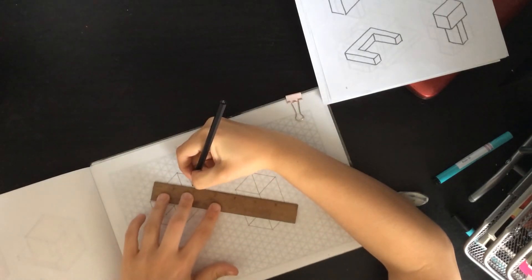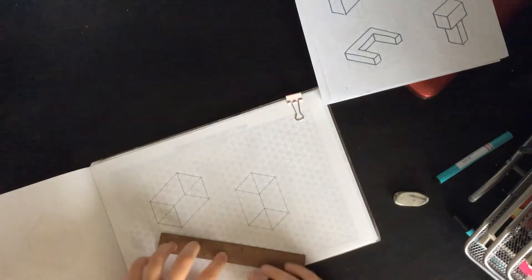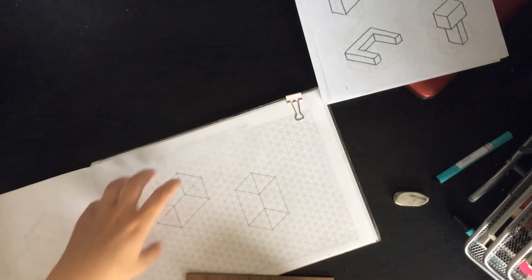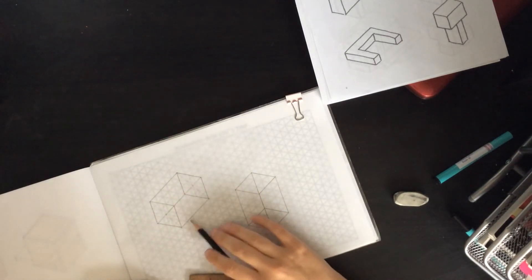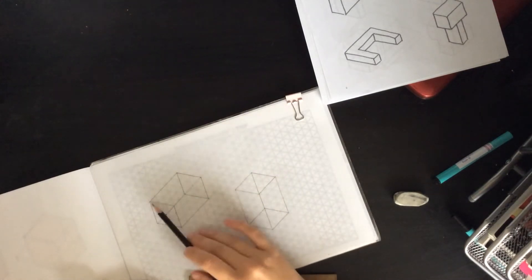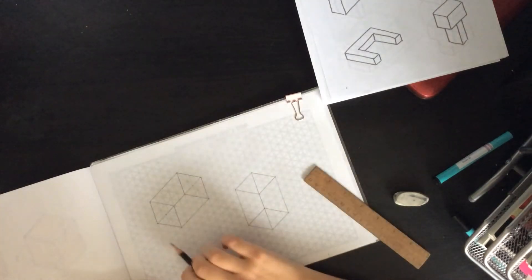Right, so all these lines at the moment are construction lines, so they should be drawn as light as possible because you will need to rub them out. I've obviously drawn it a little bit darker so that you can see on the video.